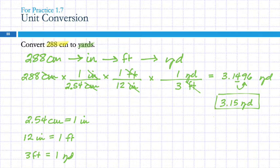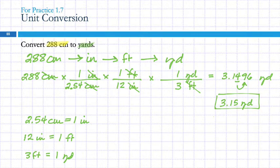Is everything within the English system exact to each other, and everything within the metric system exact to each other, but when we cross between them it's not exact? Yes. Within the English system, length units are all exact because they're defined. Going between the systems, most of those are not exact. The one you should remember is centimeters to inches — that one is exact.